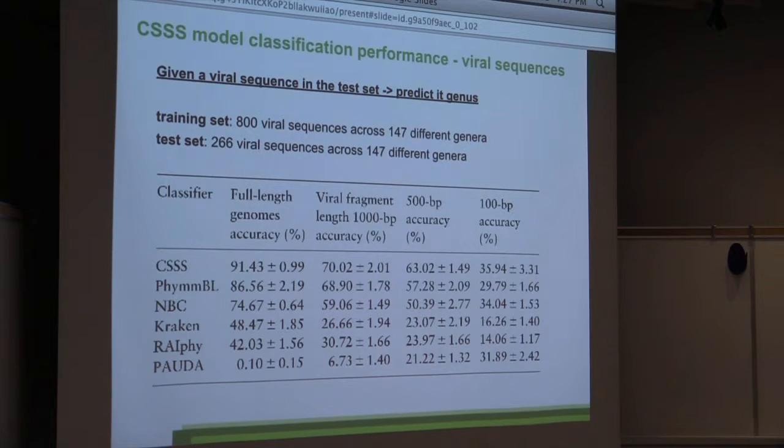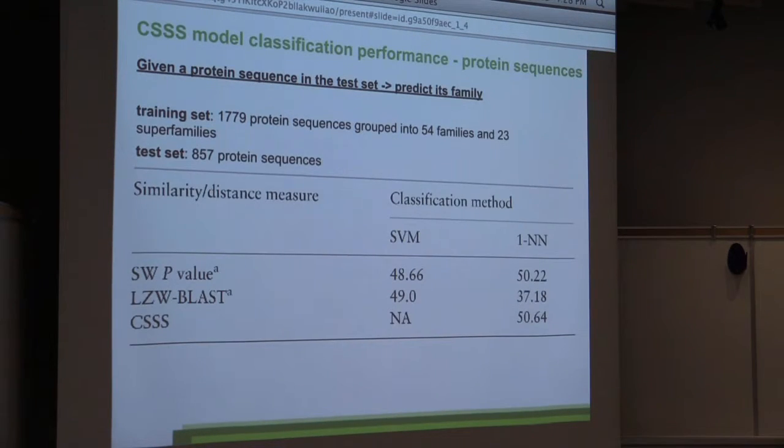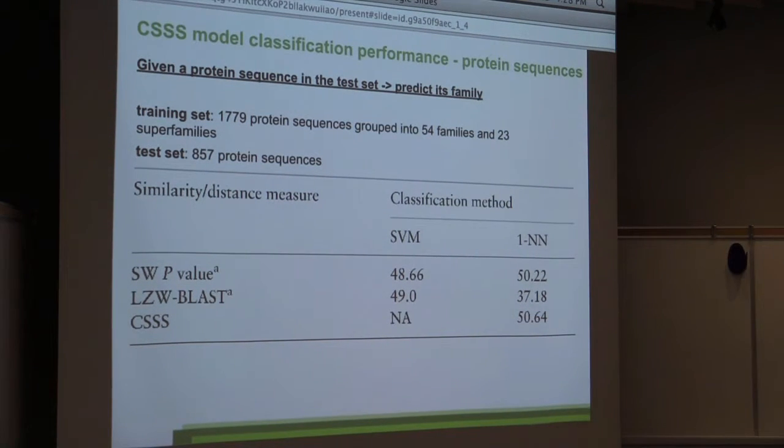So we've tested this model on three different datasets. On viral sequences, we have a training set of 800 viral sequences across 147 different genera, and we tried to basically determine the genus for each of these viral sequences. We found that our model is more accurate than most, if all, of the state-of-the-art models out there. We've tested it also on metagenome data with 759 base pairs on average, and we were trying to predict the phylum. We also found overall that it was better than the models we compared to. And we also used it to actually predict the family for protein sequences. We have shown that a similar model that uses the compression-based measure with BLAST basically improved the accuracy by more than 13%.